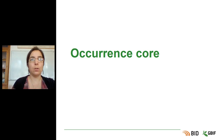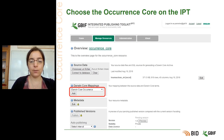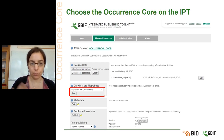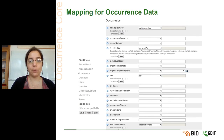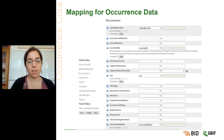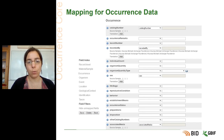Now let's look at the occurrence core. On the main page of a dataset resource on the IPT, once you have uploaded your source data, you select a core in the red box shown on the slide. Once you have selected the occurrence core, you can map your fields to the standard for occurrence data. We will cover this in more detail with practical exercises on the IPT.